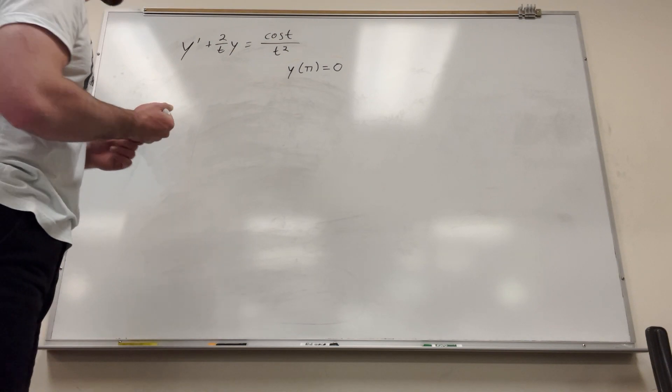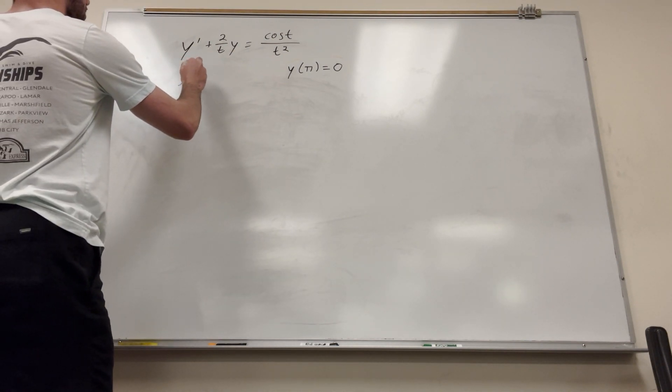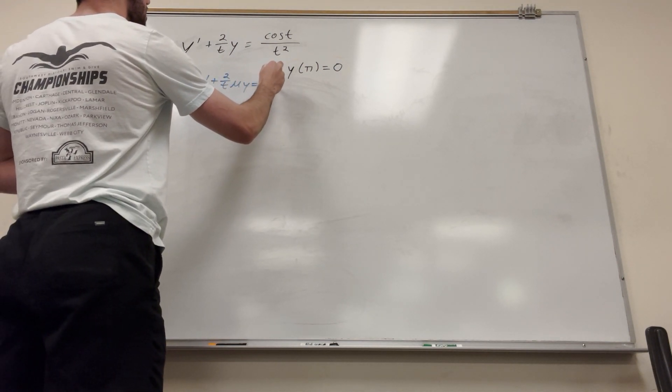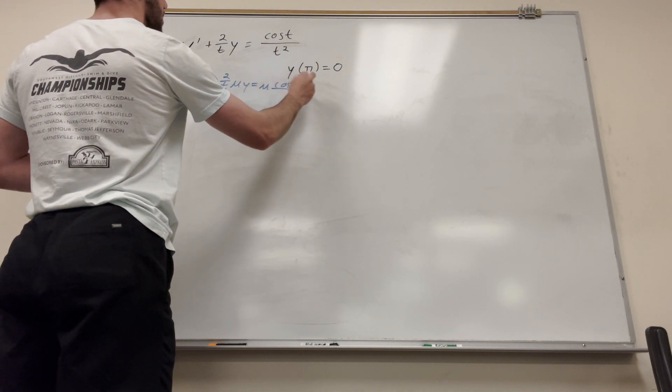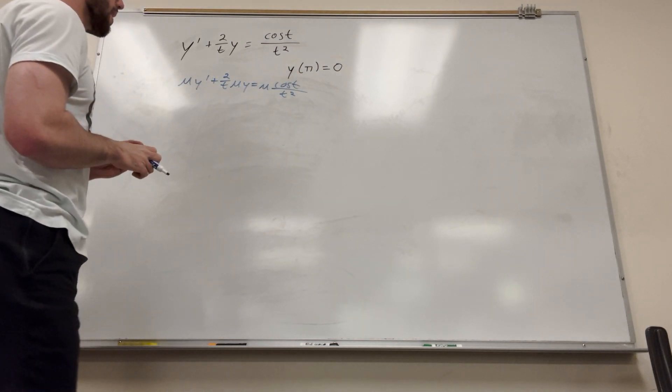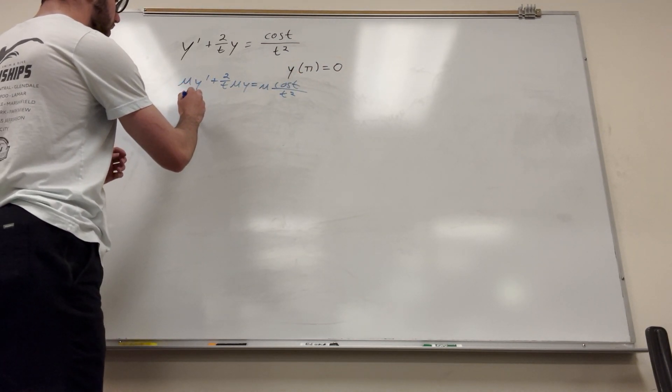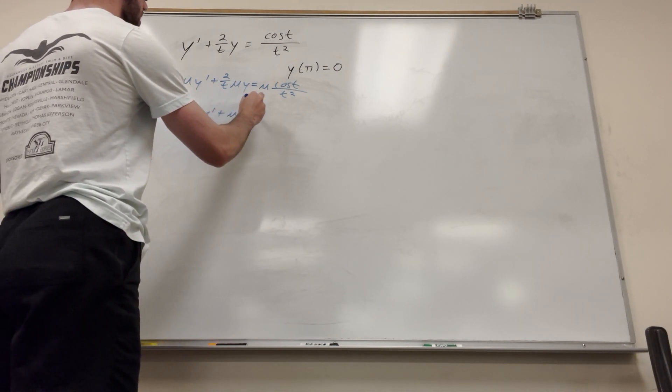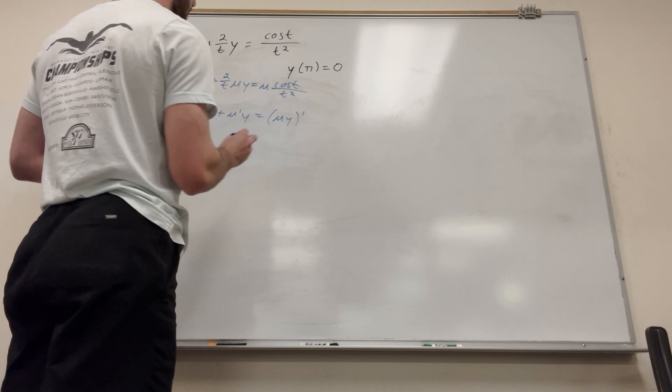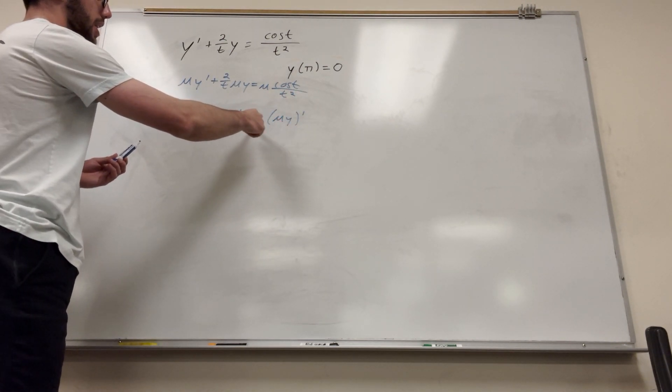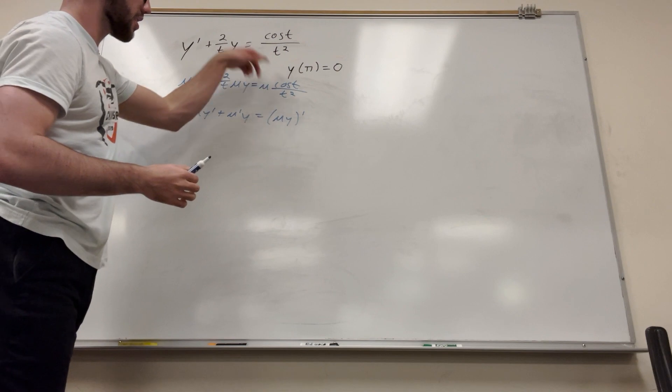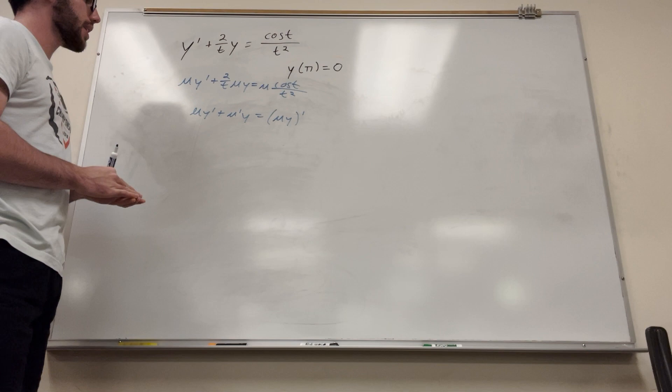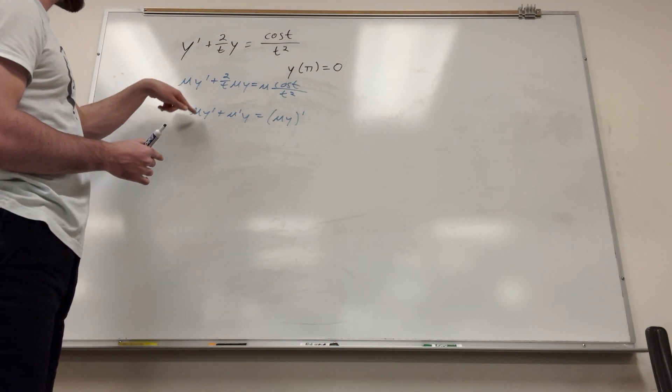But we're going to multiply both sides by mu. So mu y prime plus 2 over t mu y is equal to mu cosine of t over t squared. Now basically what we're trying to do is we have this equation here, mu y prime plus mu prime y is equal to mu y prime. And then what we can do is if we have mu prime y, we can take the integral of this side, take the integral of this side, and move on from there just to get a simple y. So to do that, how are we going to do it? Well, we have to make this equation match this equation.